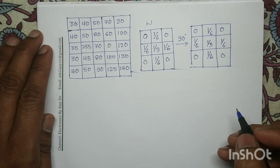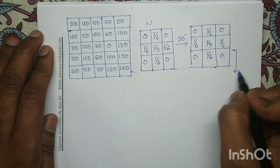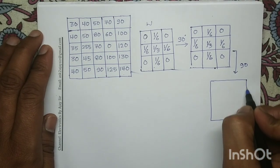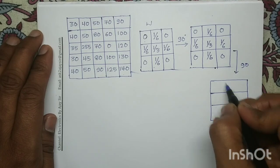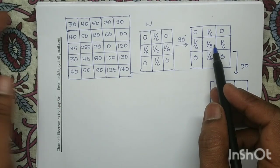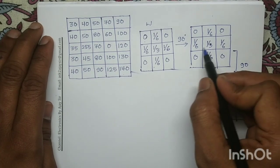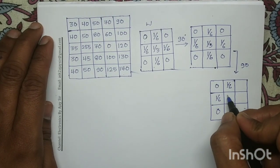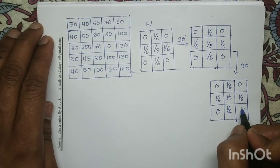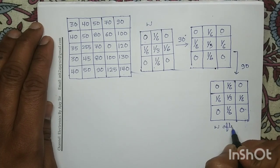Now in order to achieve a total 180 degree rotation, again this mask we will rotate it by 90 degrees in the anticlockwise direction. Rotating again means this first row becomes the first column, this second row becomes the second column, and this third row becomes the third column. Now this is my mask W after rotating 180 degrees.